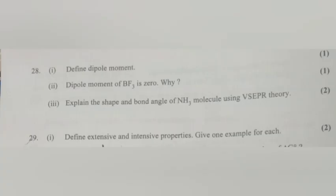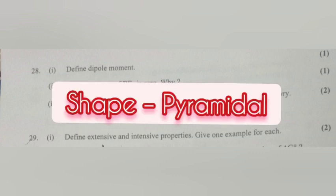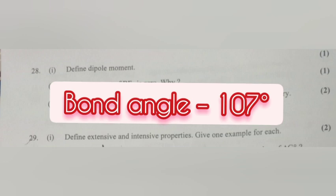Question 3: Explain the shape and bond angle of NH3 molecule using VSEPR theory. Answer: Shape is pyramidal, bond angle is 107 degrees.